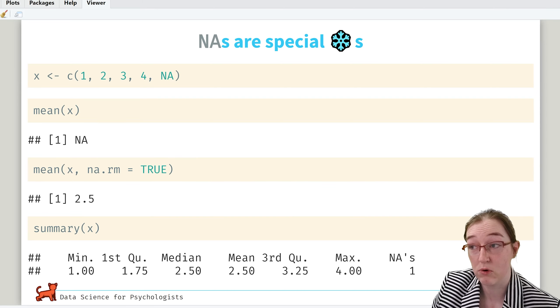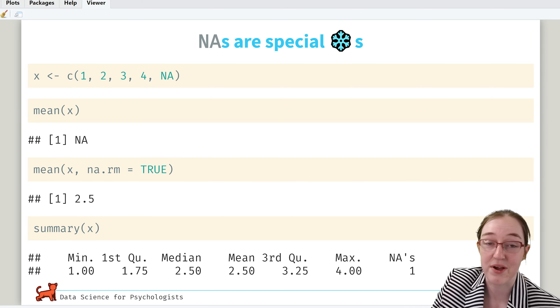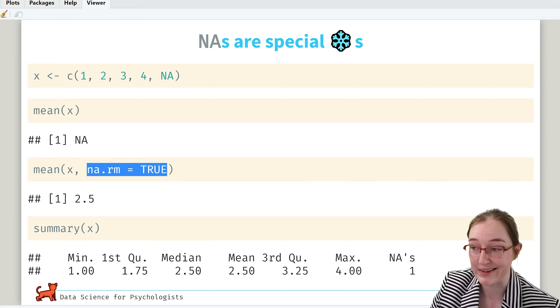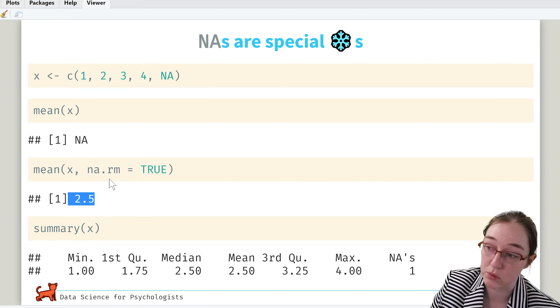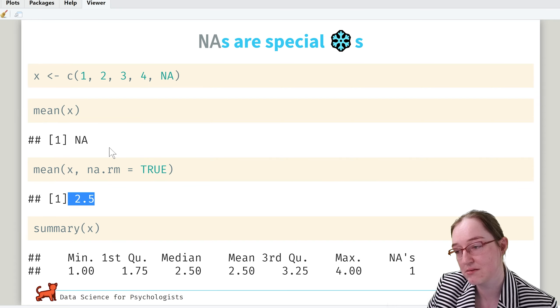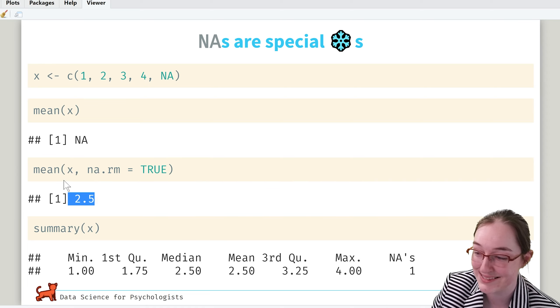So for mean, if you want to calculate the values that you can calculate, you need to change a setting. You have to give it an argument of na.rm equals TRUE. And what this is short for is missing remove. So remove the missing, yes, and then calculate. And it gives us 2.5. In some ways, I kind of wished the default was to do this, but I understand why it is the way it is.